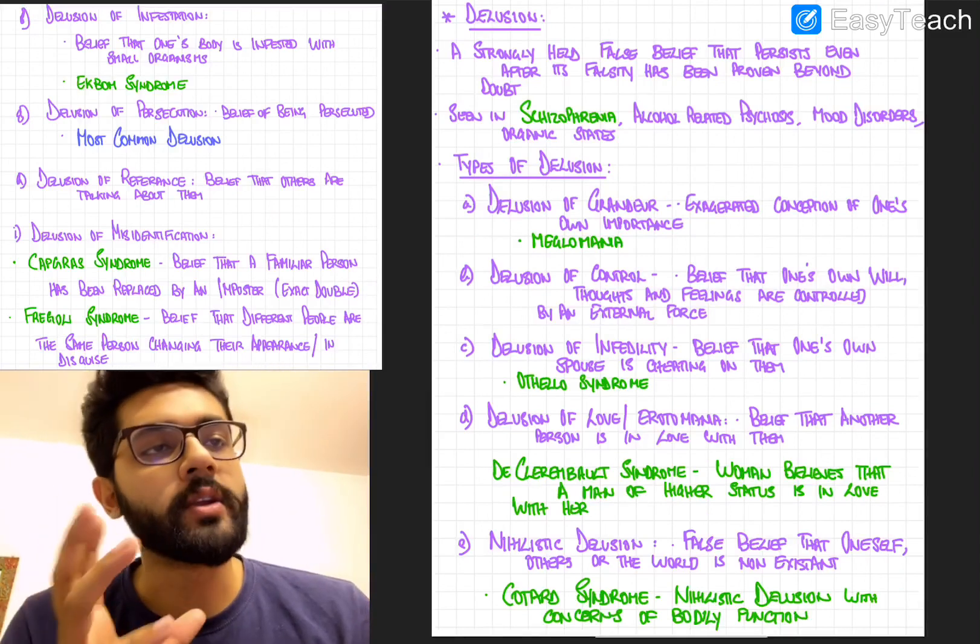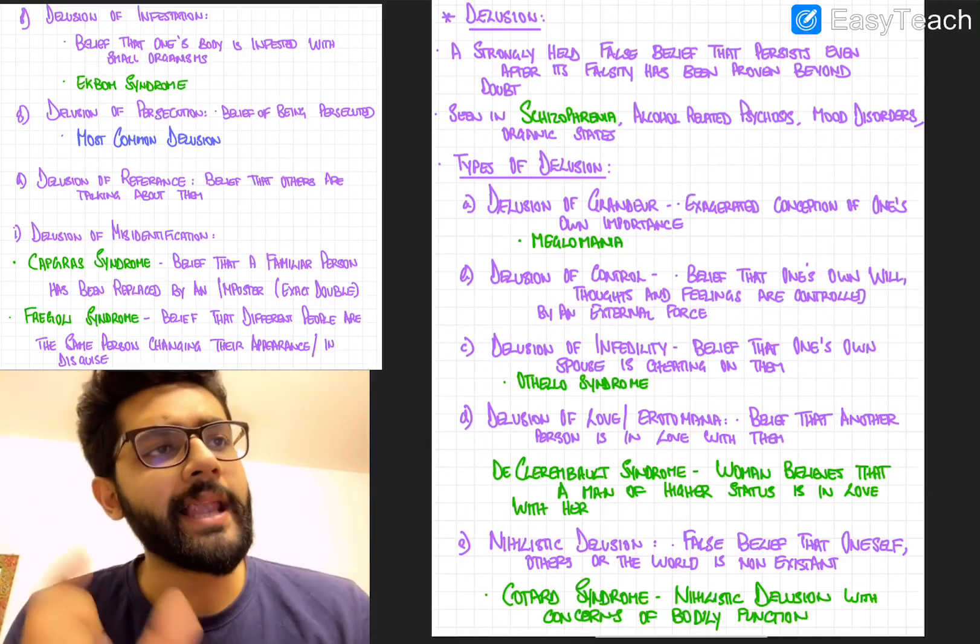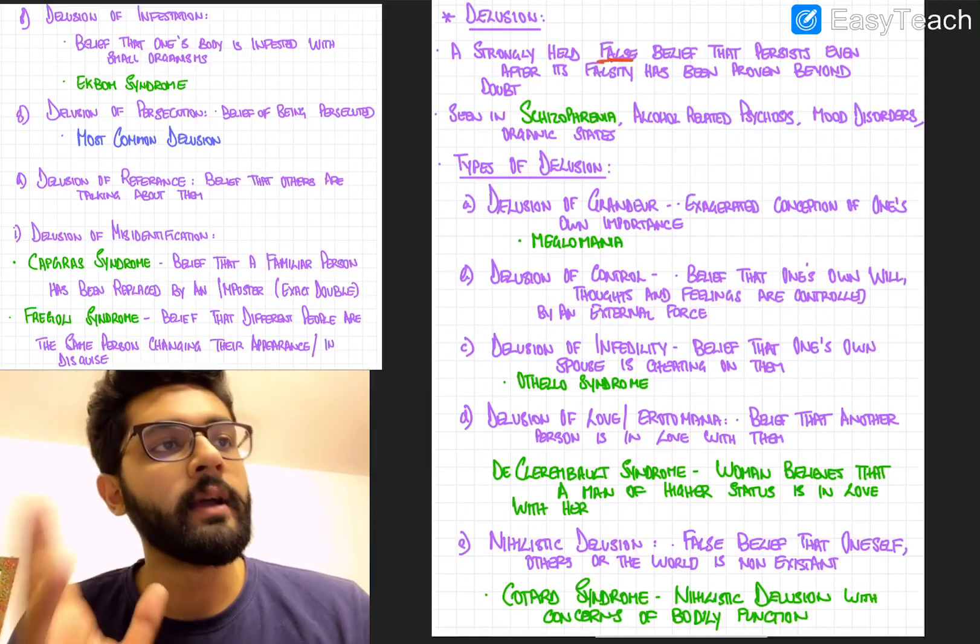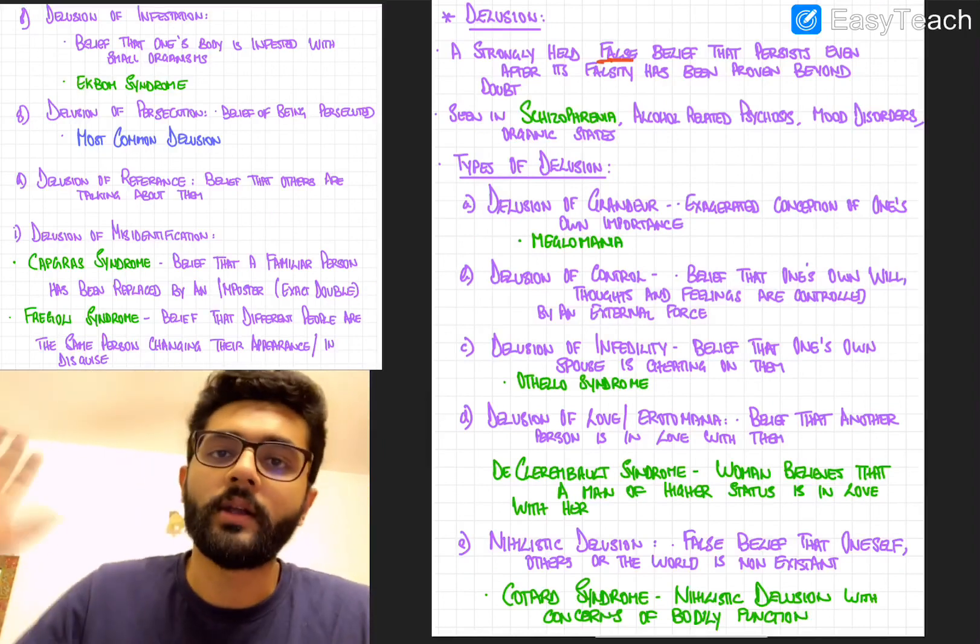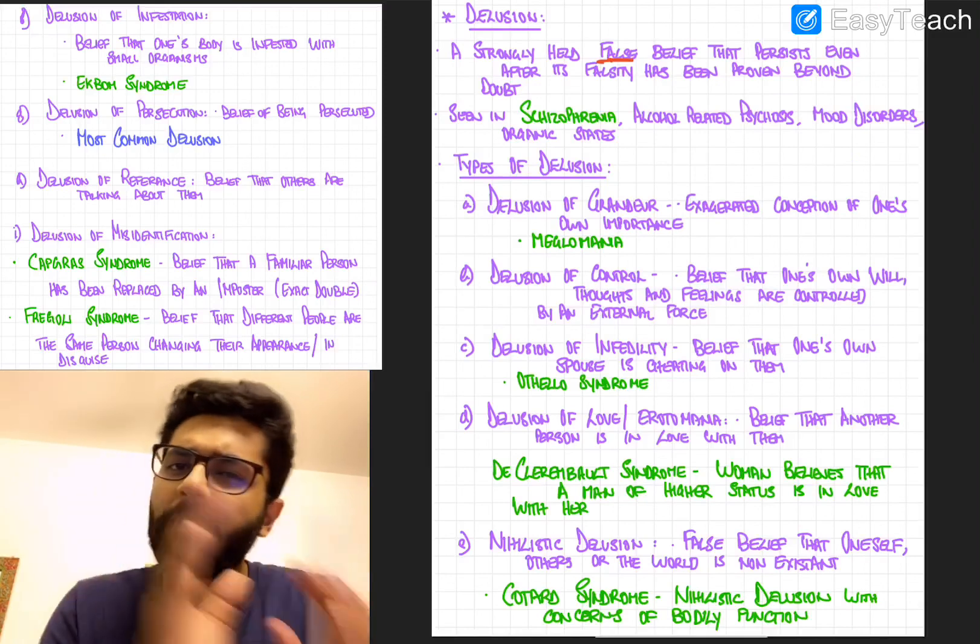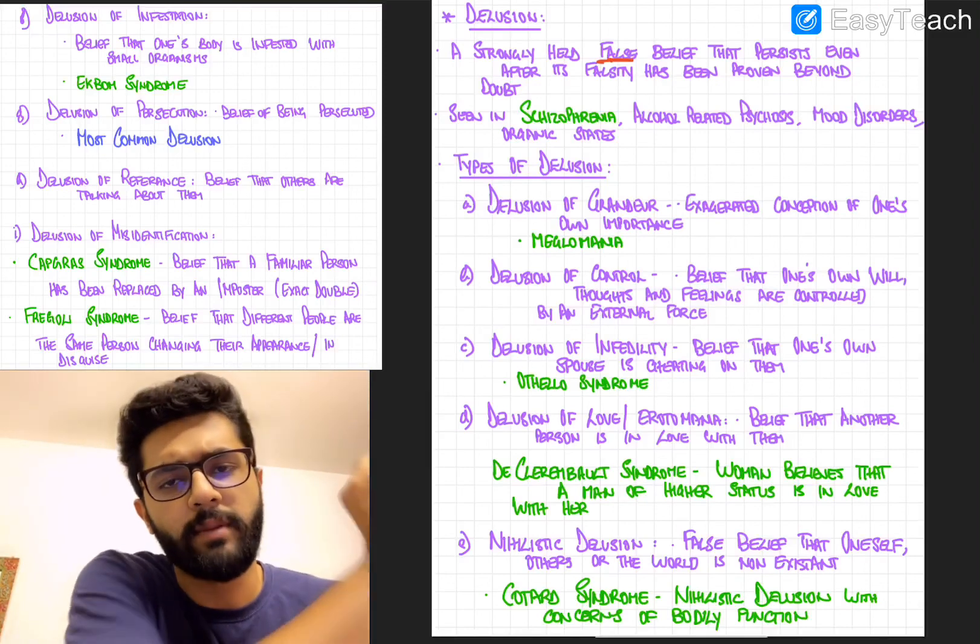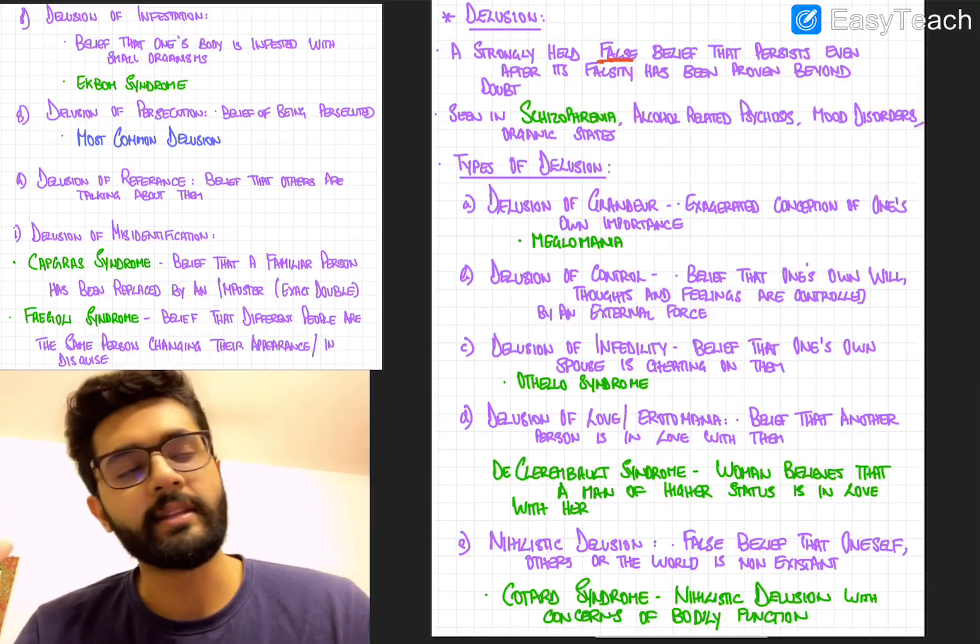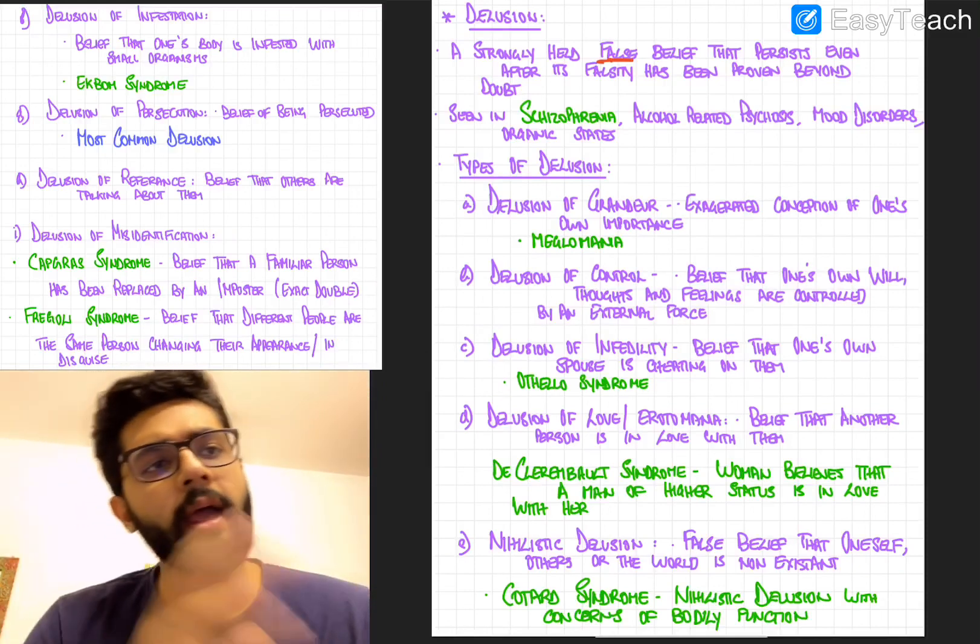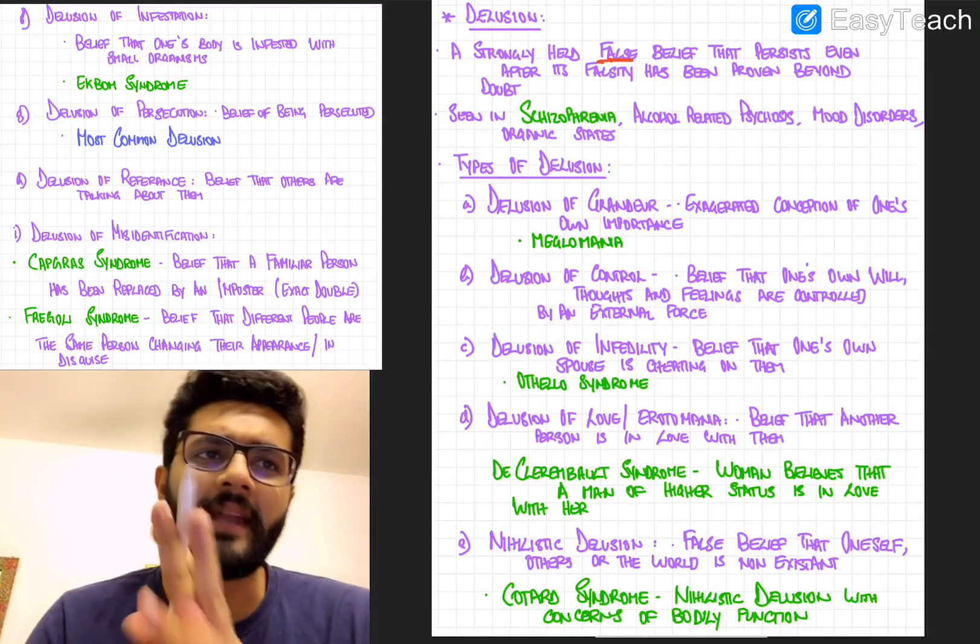So firstly, a delusion is a strongly held false belief that persists even after its falsity has been proven beyond doubt. It is seen in schizophrenia, alcoholic related psychosis, mood disorders, particularly depression and also in some organic brain diseases.